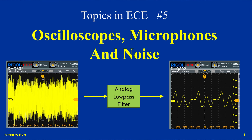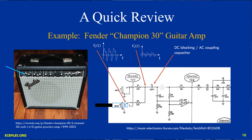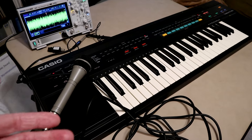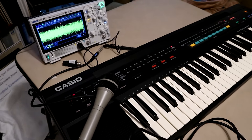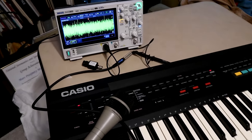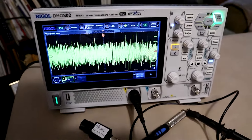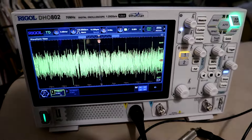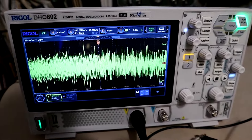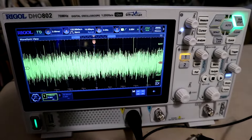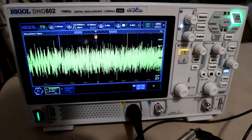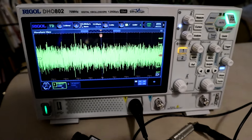Welcome to episode 5. In episode 4 we were talking about guitar amps, and today I brought out a keyboard. I also have a brand new oscilloscope here — it is a 12-bit scope. Beautiful screen, beautiful scope, terrible waveform.